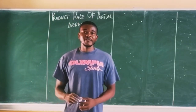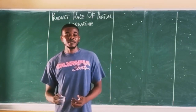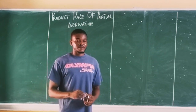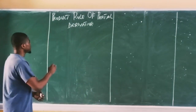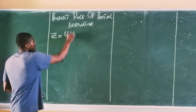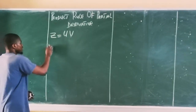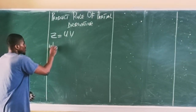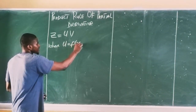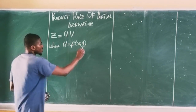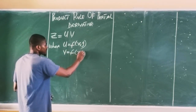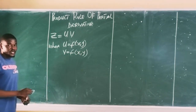Welcome to Engineer's Maths. Now we are going to take us through the production rule of partial derivatives. Let's say that Z is equal to U times V, where U is a function of X and Y, and V is also a function of X and Y.